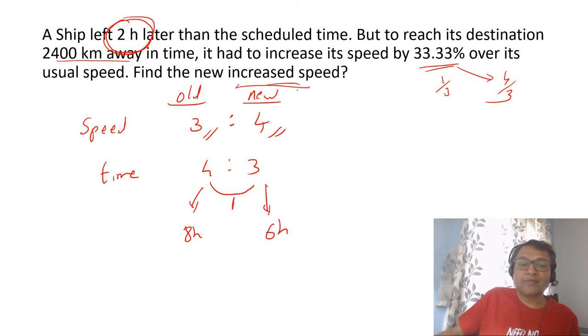We want the new increased speed, which is 6 hours. That means it covers 2400 kilometers in 6 hours, which will be 400 kilometers per hour. 400 is the speed.